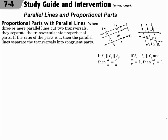When three or more parallel lines cut two transversals, they separate the transversals into proportional parts. If the ratio of these parts is 1, then the parallel lines separate the transversals into congruent parts.